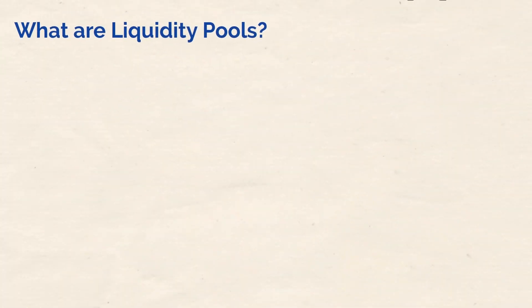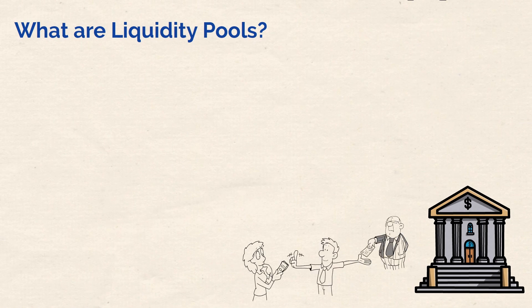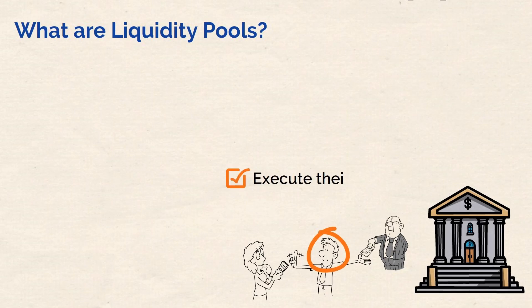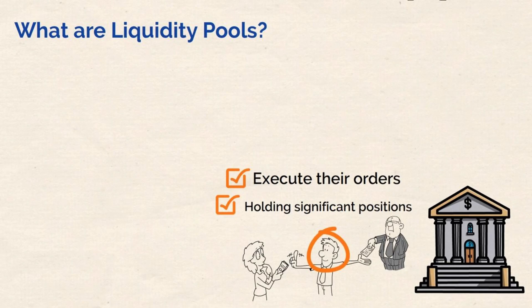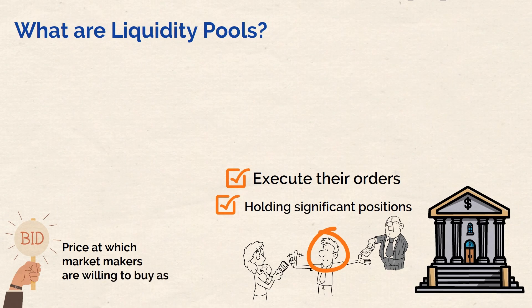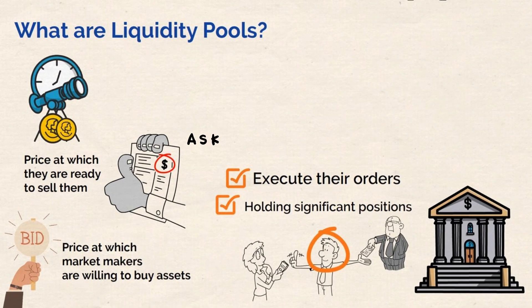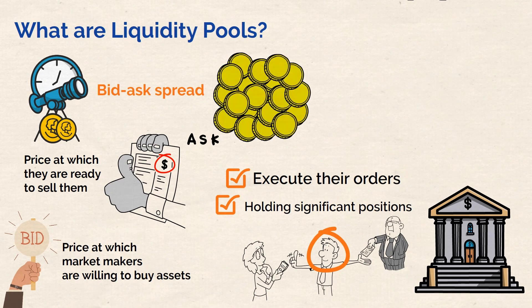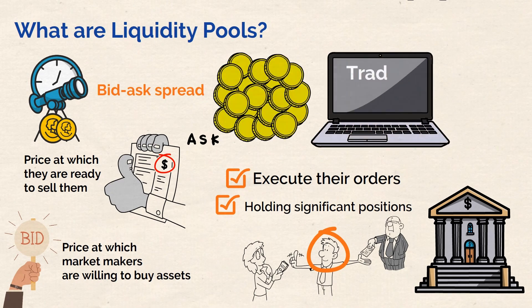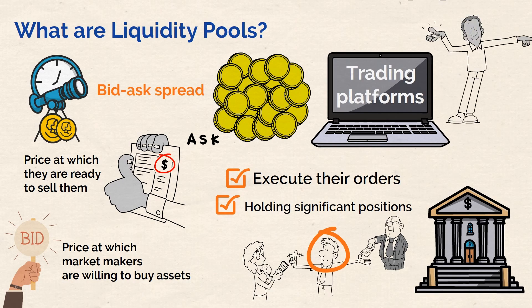Thanks to market makers, despite every trade requiring a counterparty, there always seems to be one readily available. These market makers are critical in ensuring traders can always execute their orders by holding significant positions in assets such as stocks. The bid is the price which the market makers are willing to buy assets, while the ask is the price at which they are ready to sell them. To make a profit, market makers create a slight price discrepancy between the bid and the ask price, known as the bid-ask spread. Since market makers possess large quantities of assets, they assist trading platforms in matching buyers with sellers quickly.